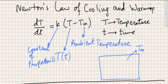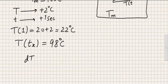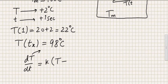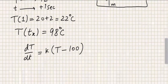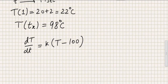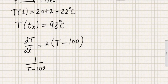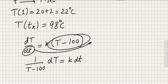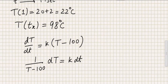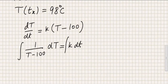Using Newton's Law of Cooling and Warming: dT/dt = k times (T minus 100), since the ambient temperature is 100. I'm going to rearrange this: (1 over T minus 100) dT = k dt. I've just rearranged by taking the temperature term to one side and the time term to the other, and then I take the integral on both sides.